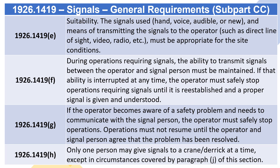1926.1419(E) — Suitability: The signals used — hand, voice, audible, or new — and means of transmitting the signals to the operator, such as direct line of sight, video, radio, etc., must be appropriate for the site conditions. 1926.1419(F): During operations requiring signals, the ability to transmit signals between the operator and signal person must be maintained.